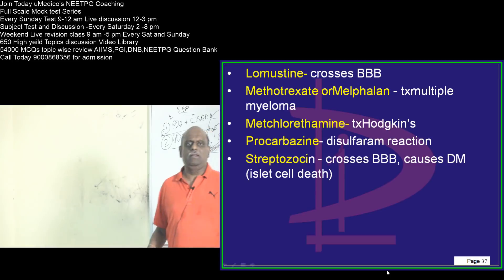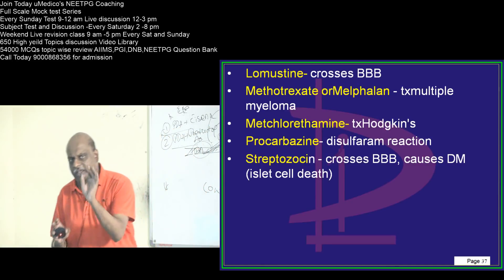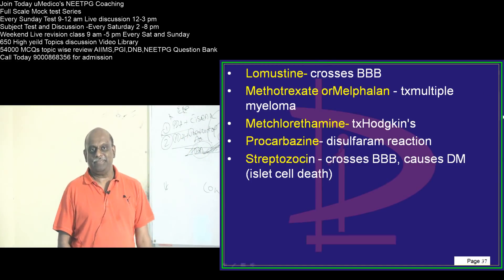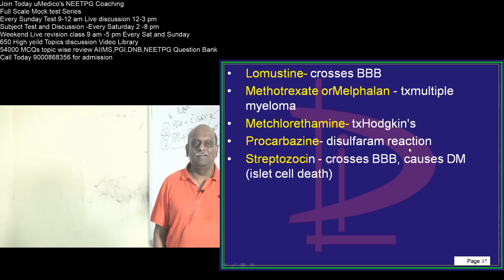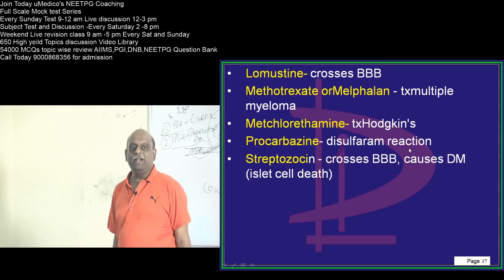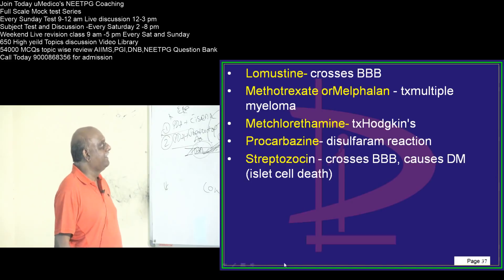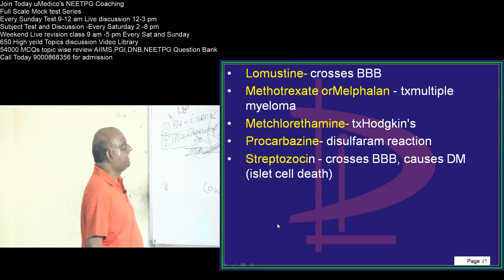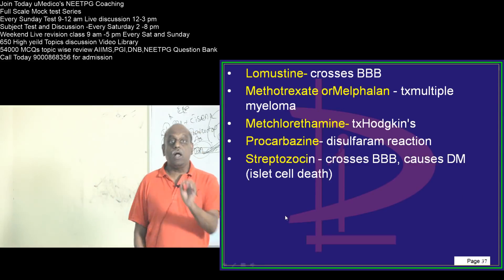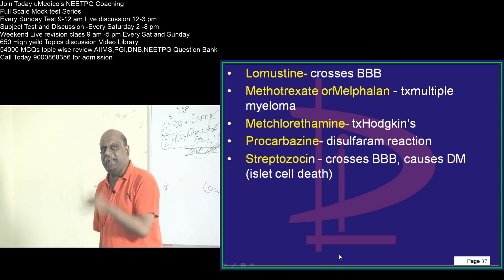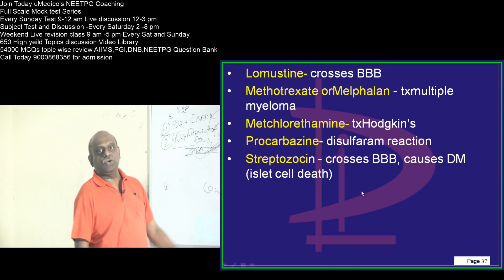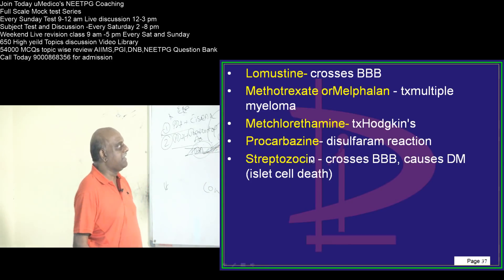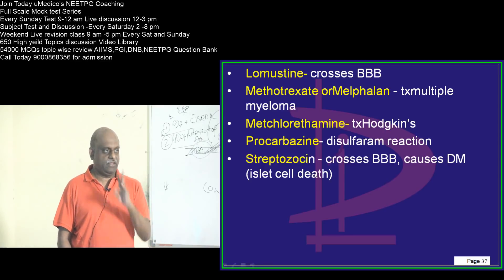Regarding lomustine, the single bullet you should remember is it crosses the blood-brain barrier. Methotrexate and melphalan immediately reminds you of multiple myeloma treatment. Mechlorethamine — Hodgkin's treatment, don't forget. Procarbazine — disulfiram reaction, favorite question of the examiner. Streptozocin causes diabetes because it leads to the death of islet cells and it can cross the blood-brain barrier — those are the two bullets about it.